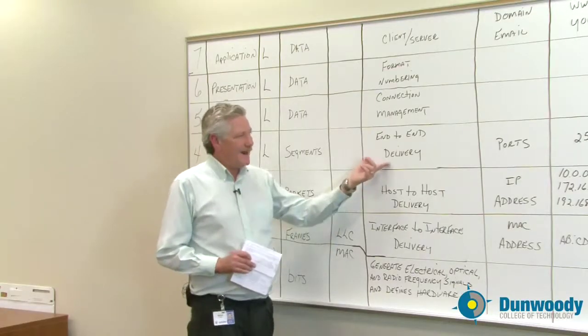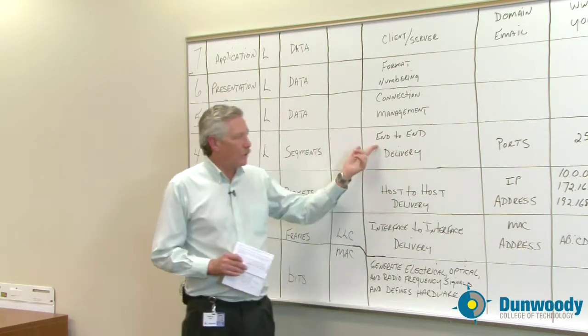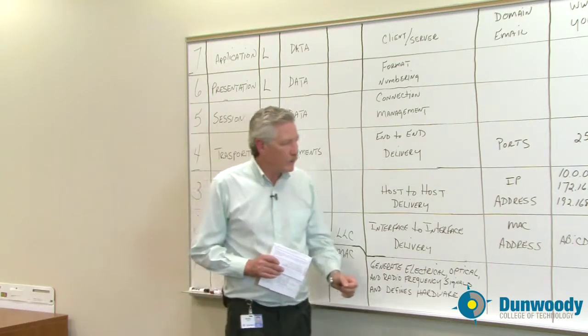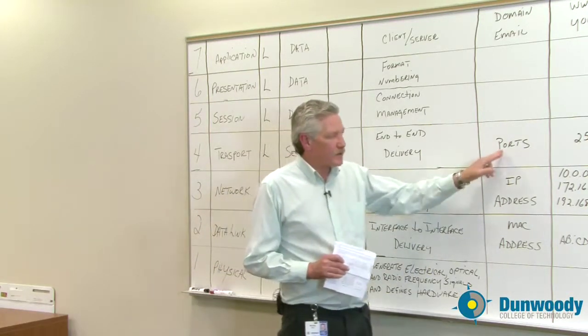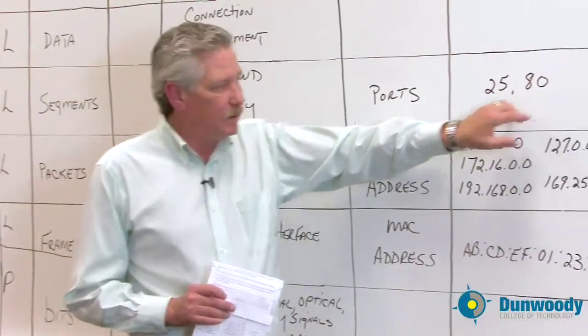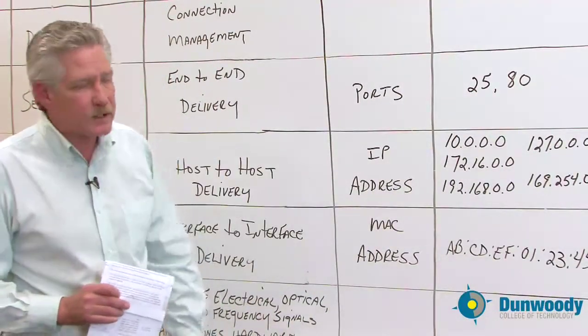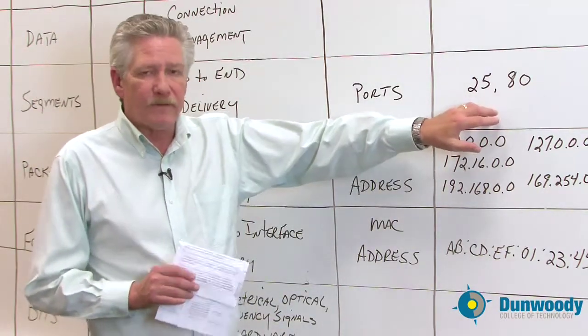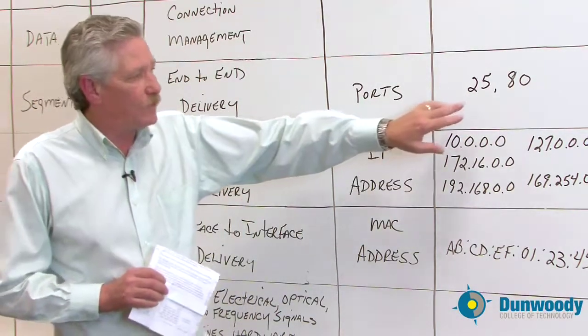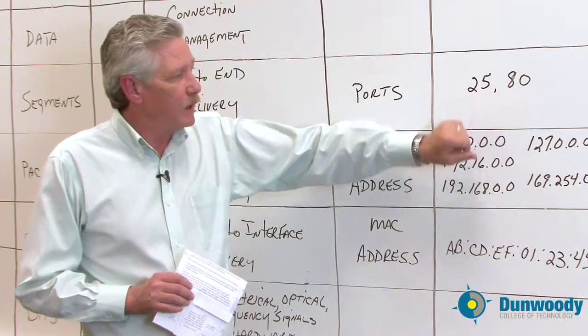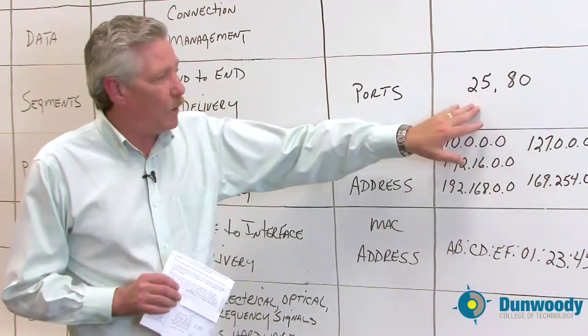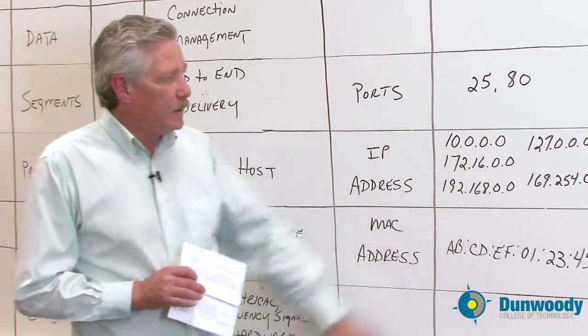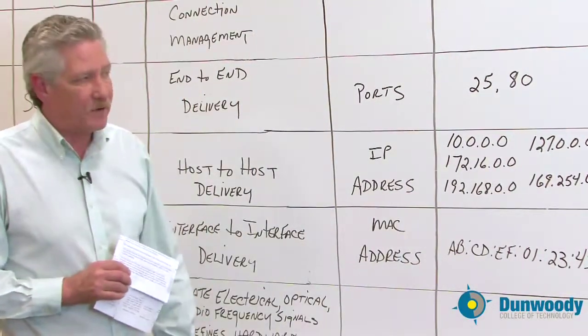Now we're at end-to-end delivery. That could mean from your laptop to the web server that you're looking at. And we use ports. Now, I'm only showing two ports. There are over 65,000 ports. And there's 1,023 well-known ports. 25 and 80 are two of the well-known ports. 25 is for mail, SMTP mail. And 80 is used for web browsers.